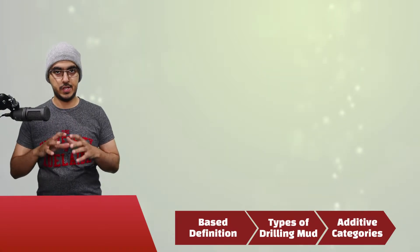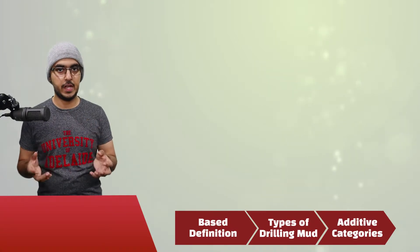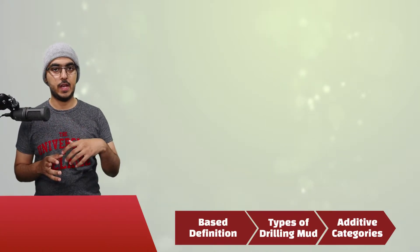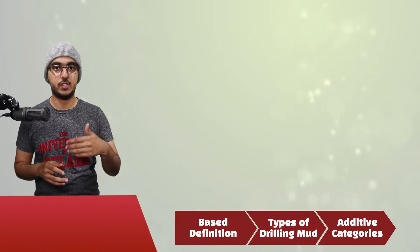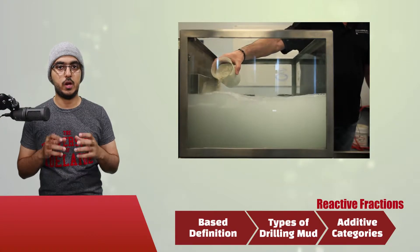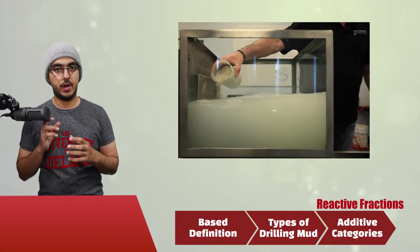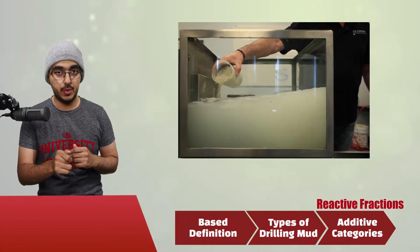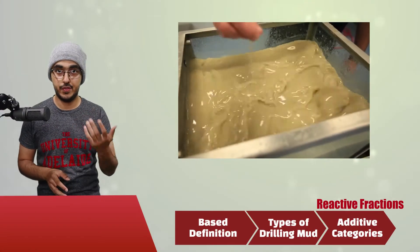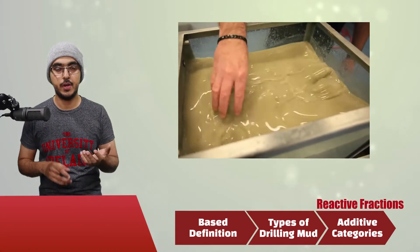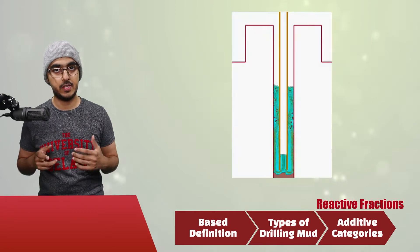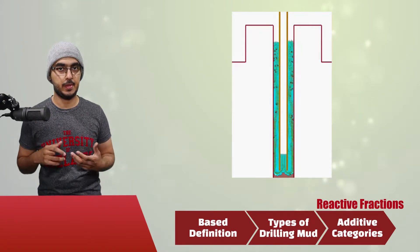We know that a drilling mud is a mixture of fluids and chemical additives, so let's talk about these additives and what their effects are. First of all, we have reactive fractions, which are low-gravity clays that are added to the mud to increase its viscosity.